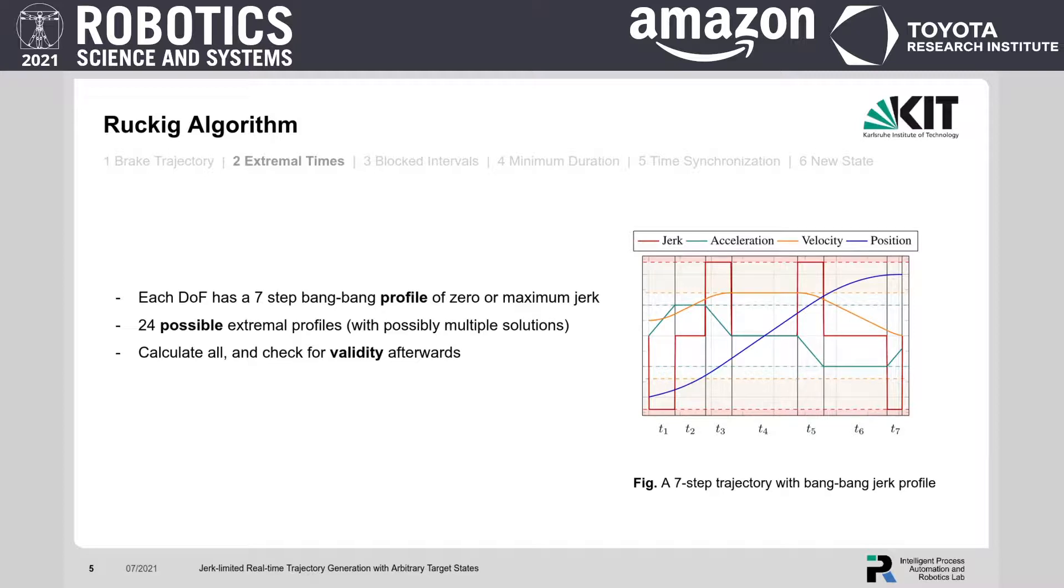In comparison to related work, where for example a decision tree is used to find the correct profile, we calculate all profiles first, and find the fastest one afterwards.